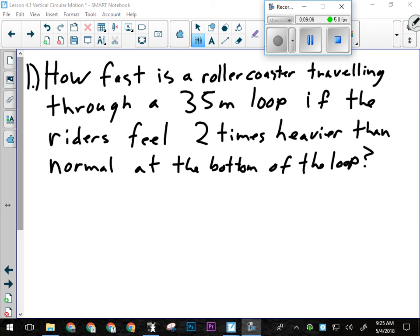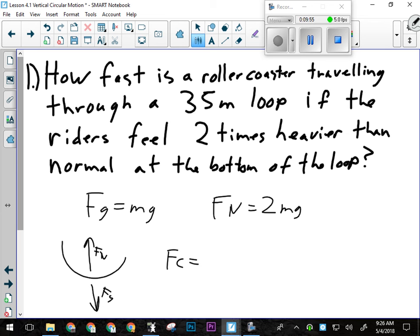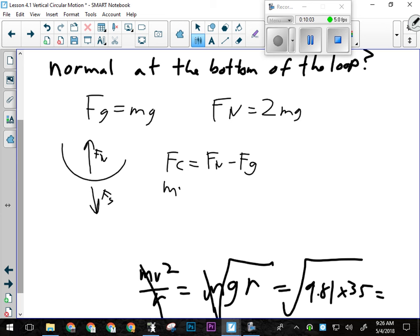So they feel two times heavier than normal at the bottom of the loop. How heavy do you feel if you're normal? What would you calculate your weight to be if you were feeling normal? Mass times gravity. So really then, what we're saying is that the force of gravity is still m times g. We can't change gravity, but they feel two times heavier than normal. What force do you feel? Normal force, your apparent weight. Their apparent weight is 2mg because they're feeling two times heavier than normal. So at the bottom of the loop, gravity is acting out and normal force is acting in.